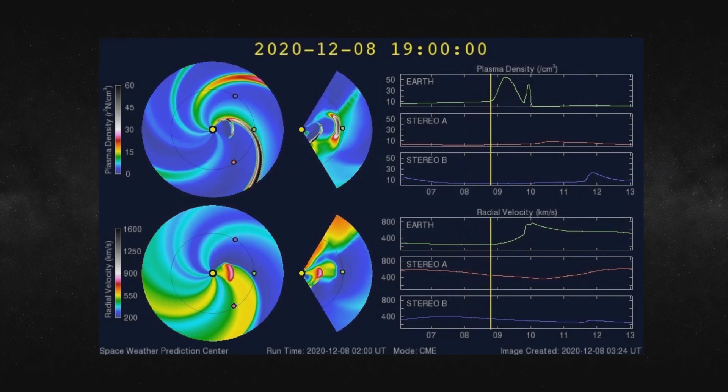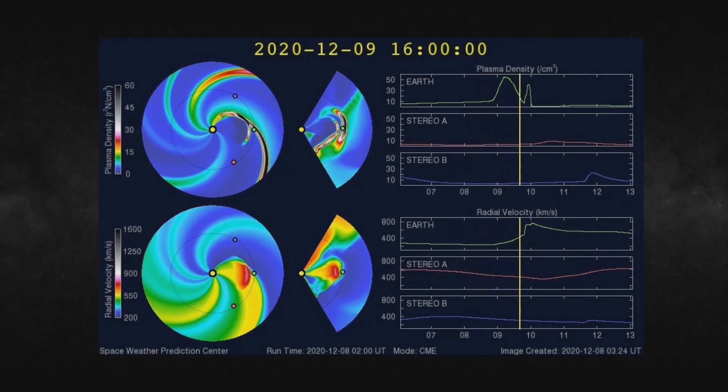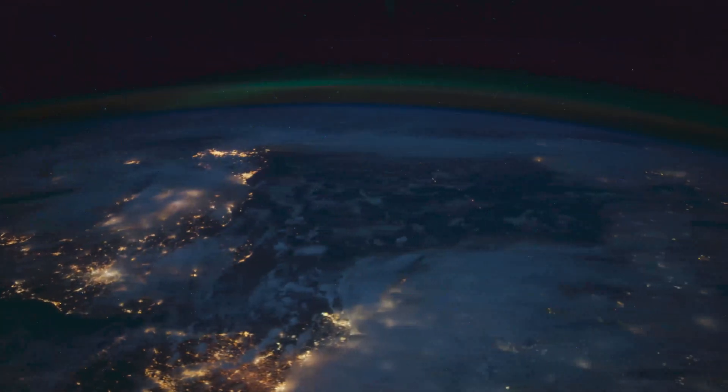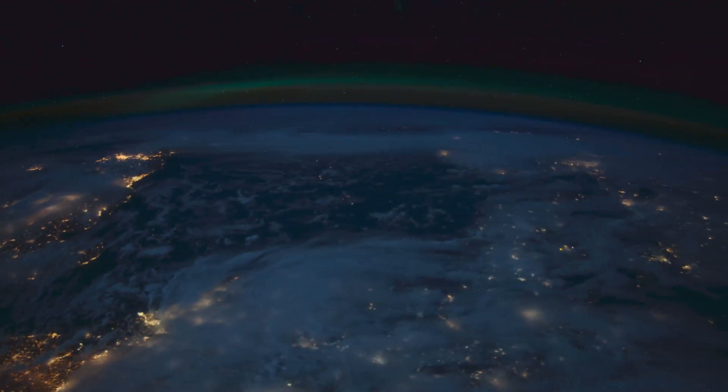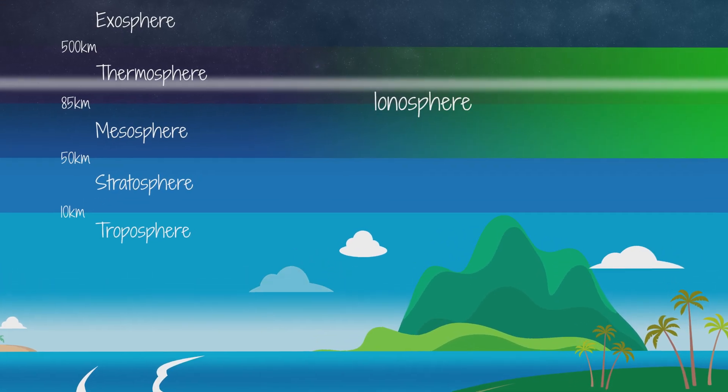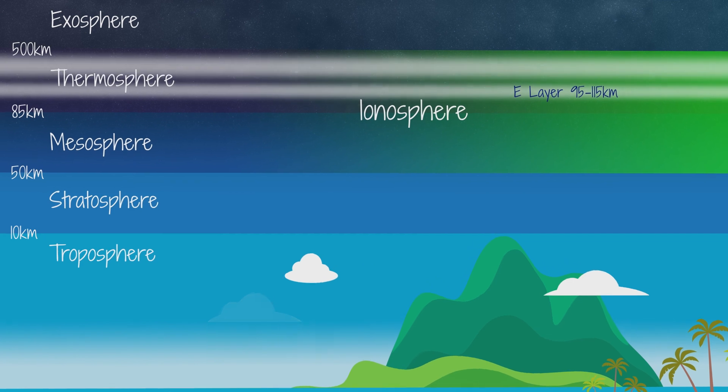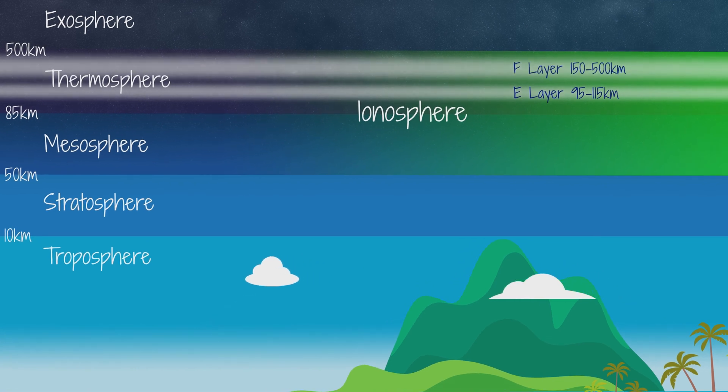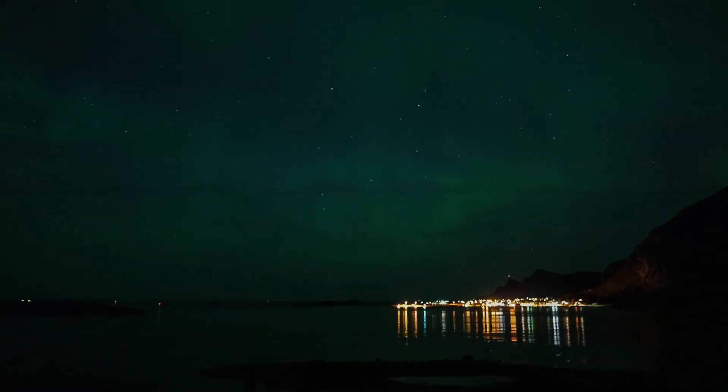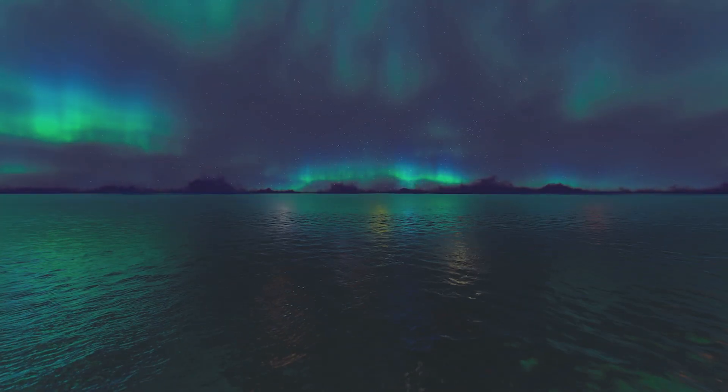When solar wind is directed towards Earth, this magnetic field acts as a shield. Some of the wind's particles pass through the magnetic field into the ionosphere, a layer of upper atmosphere that begins about 90 kilometres above the Earth's surface. Trapped in the ionosphere, the particles head towards the poles, producing colourful auroral glows.